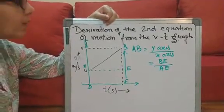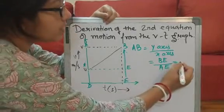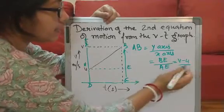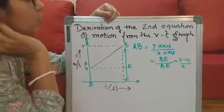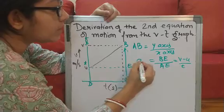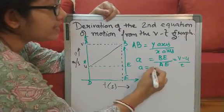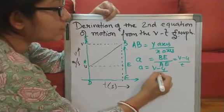Now, be is how much? Be is v minus u and ae is t. And as I said, the slope of this line ab will give me acceleration. So I can write from here that a is equal to v minus u by t.